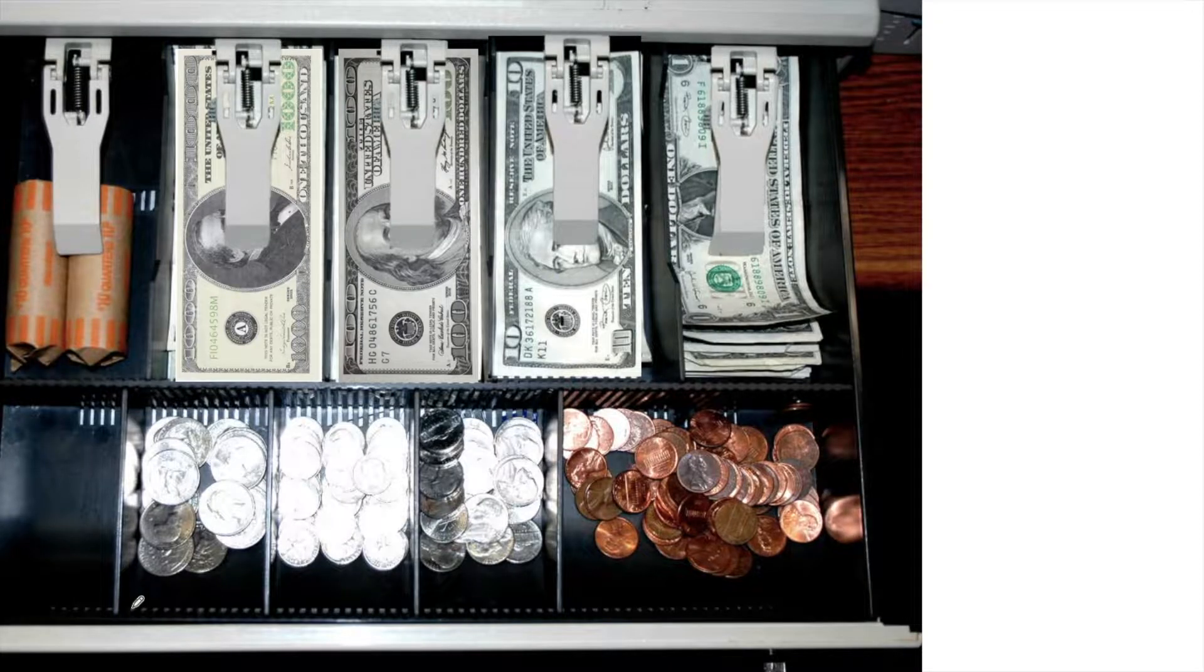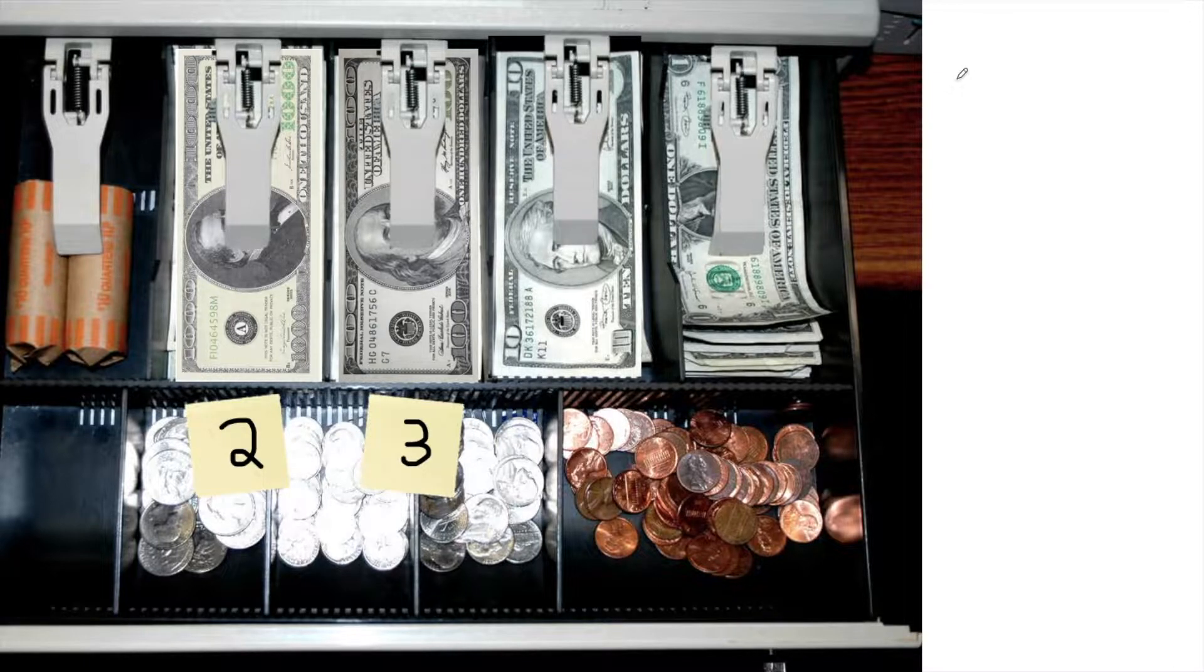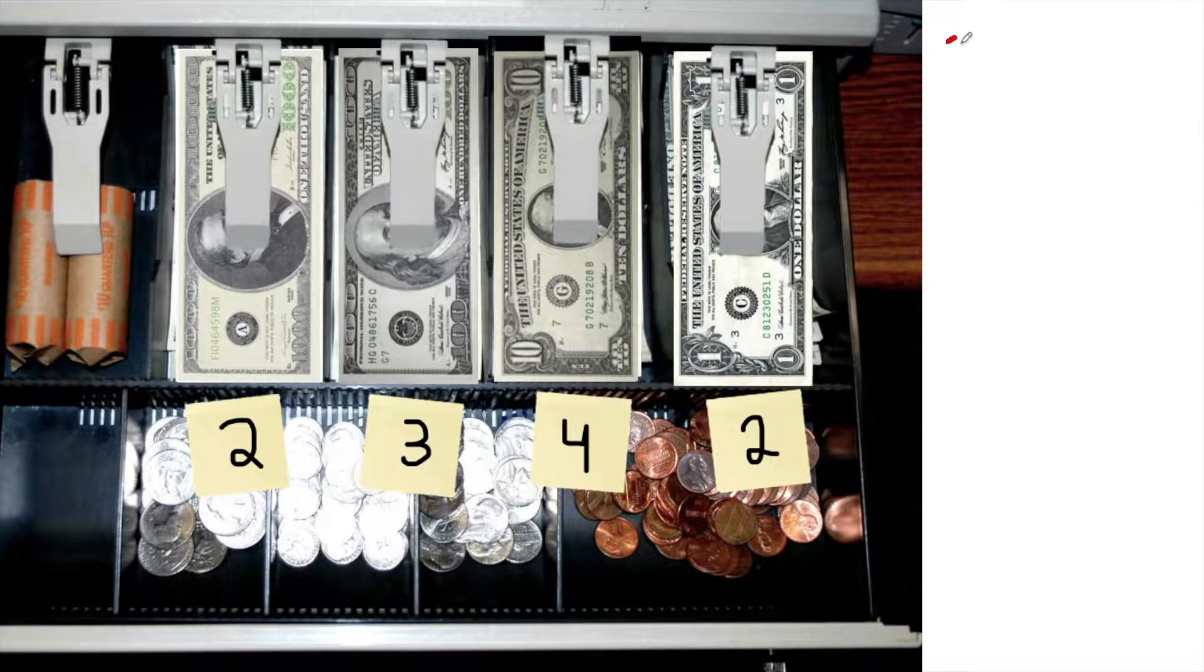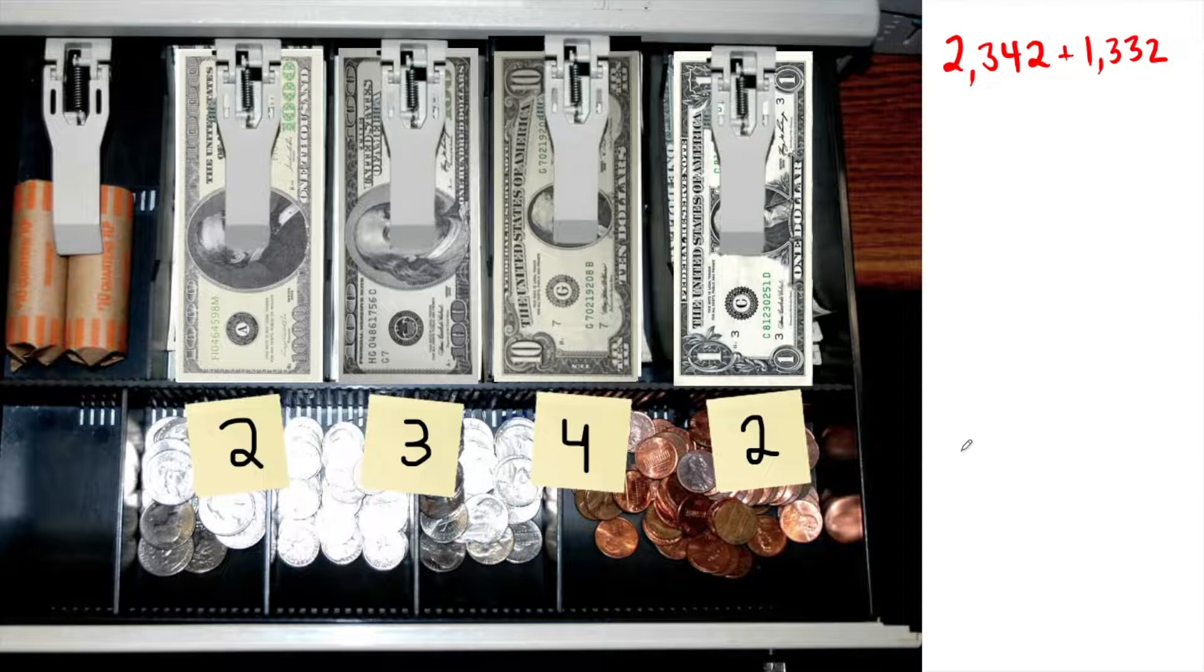Let's go back to our cash register drawer. Remember, at the end of the shift, the grocer can label how many bills are in each drawer. 2, 300s, 4, 10s, 2, 1s. We have $2,342. Now I want to add $1,332 to my drawer.